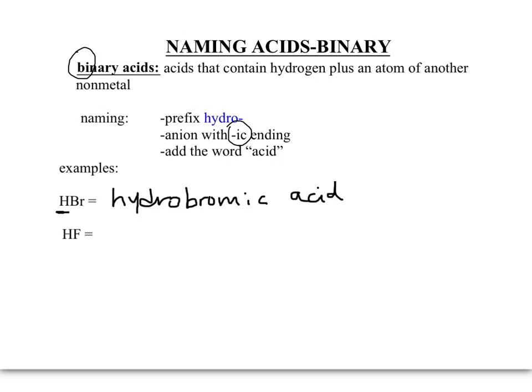For HF, we've got hydrogen again as our signal that we have an acid, plus fluorine. Start with the prefix 'hydro,' then fluorine becomes 'fluoric,' and then add the word 'acid.'